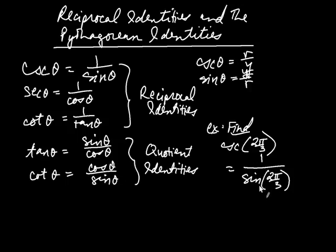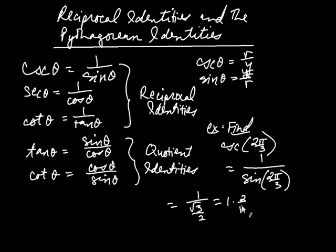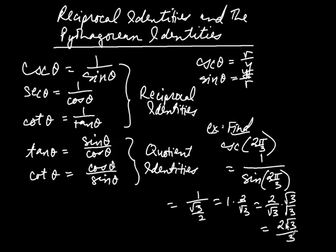Sine of 2π/3 is √3/2, so this equals 1 over (√3/2). When you have a number divided by a fraction, that's the same as multiplying by the reciprocal, giving 2/√3. Rationalizing the denominator by multiplying top and bottom by √3, the answer is 2√3/3. The point is that people prefer to think about sine rather than cosecant, and you can use this identity to do that.